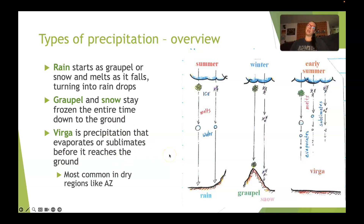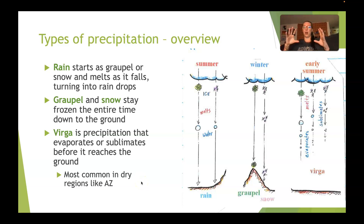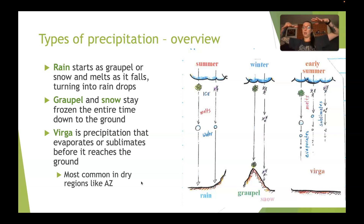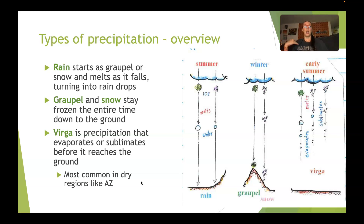Virga is something I haven't really mentioned yet — it's basically rain that evaporates or sublimates before it reaches the ground. This is really common in places like Arizona, where the lower atmosphere closer to the ground is incredibly dry. So even though up above you have clouds that are really trying to make it rain, it's so dry that the rain just straight up evaporates before it can even make it to the ground. Not just Arizona, but really any dry desert — I would see it a lot when I was a kid and my mom lived in Pueblo, Colorado.